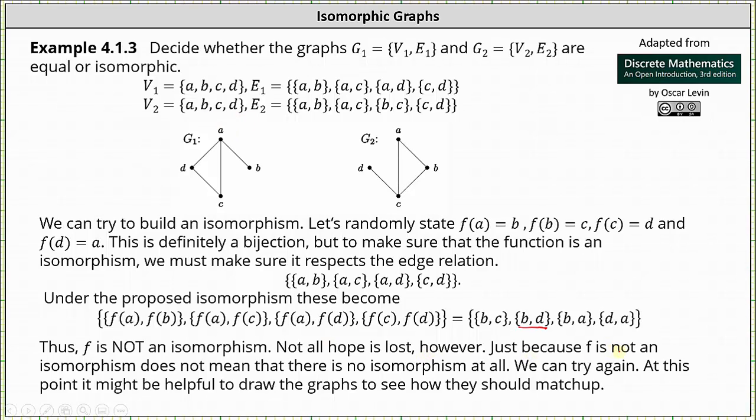Not all hope is lost, however. Just because F is not an isomorphism does not mean there is no isomorphism at all. We can just try again. At this point, it might be helpful to draw the graphs to see how they should match up. And I would argue we should always start by looking at the graphs to see how the vertices match up.